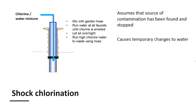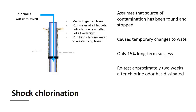Shock chlorination will cause some temporary changes to the smell and appearance of the water, which will disrupt normal use of the water for several days. Even when done properly, research at Penn State has found that shock chlorination only has a 15% long-term success rate. You should retest the water approximately two weeks after the chlorine odor has dissipated to determine its effectiveness, and again a few months later to determine long-term success.